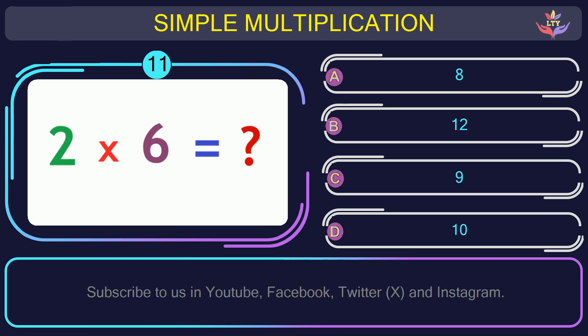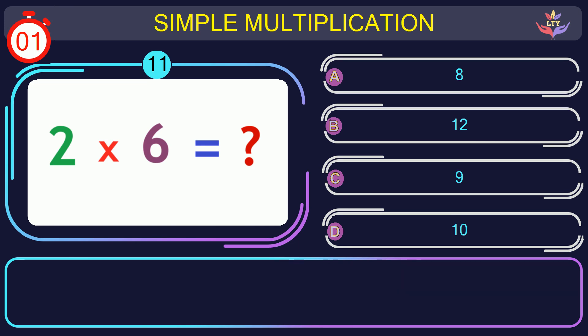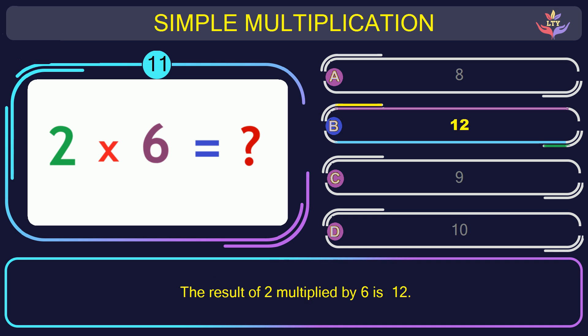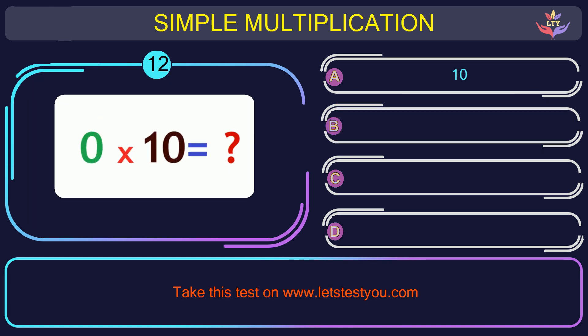Question number 11: calculate the result when you multiply 2 and 6. The correct answer is option B: 12. The result of 2 multiplied by 6 is 12.